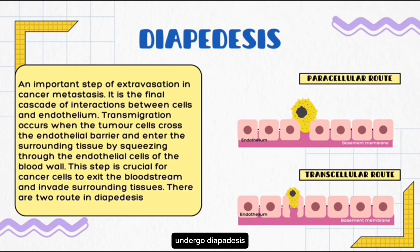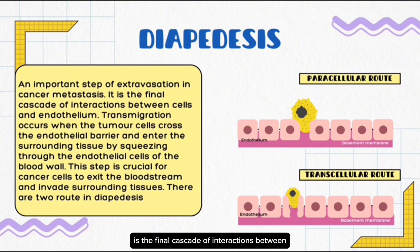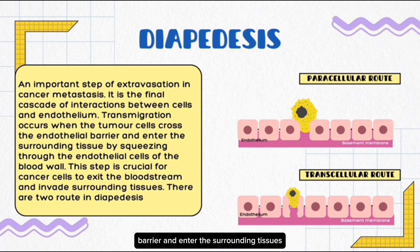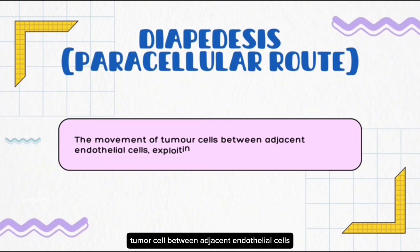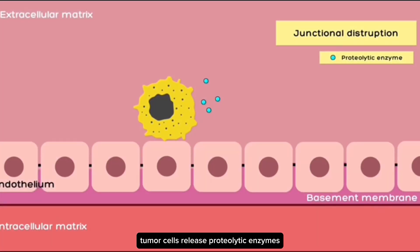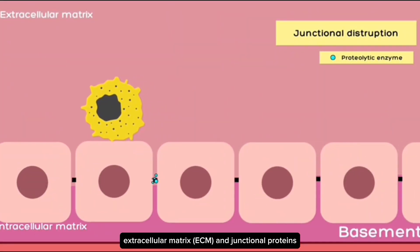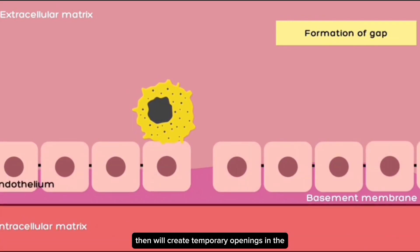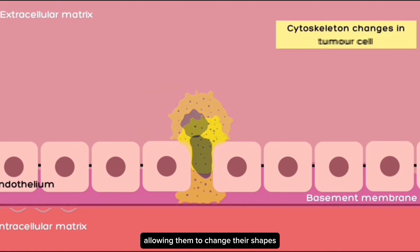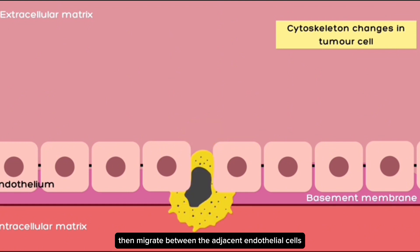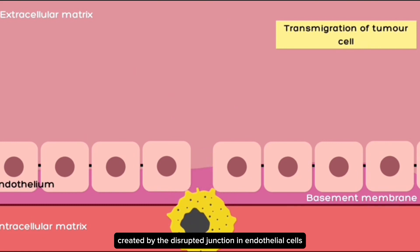After strong adhesion, tumor cells will undergo diapedesis. This is the last and important step of extravasation in cancer cell metastasis, representing the final cascade of interactions between cancer cells and endothelial cells. This occurs when tumor cells cross the endothelial barrier and enter the surrounding tissue by squeezing through the endothelial cells of the blood vessel wall. In the paracellular route, tumor cells move between adjacent endothelial cells by releasing proteolytic enzymes that degrade components of the extracellular matrix and junctional proteins, creating temporary openings. Tumor cells undergo cytoskeletal changes, including reorganization of actin filaments, allowing them to change shape and pass through tight spaces, then migrate between adjacent endothelial cells to the secondary tumor site.